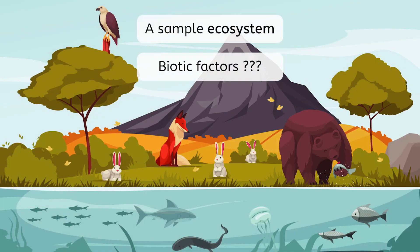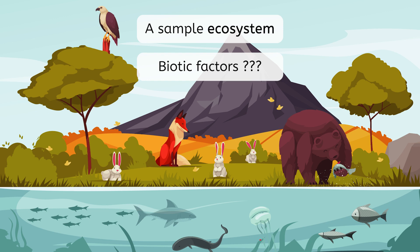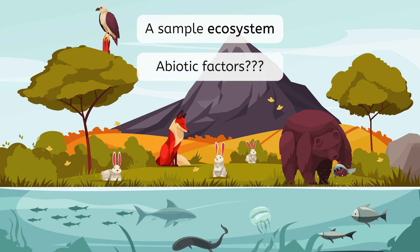What are the biotic factors in this ecosystem? I see trees, grass, rabbits, a bear, many fish, a bird, a fox, and a jellyfish. We can't see it, but there are almost certainly bacteria, archaea, fungi, and protist species living in the soil. What about the abiotic factors? There is a large mountain made of rock, as well as smaller rocks, water in the river, and air making up the atmosphere. Physical characteristics of the area, such as temperature, are also abiotic factors. To be considered a biotic or abiotic factor, something has to have an impact on the life in the ecosystem.